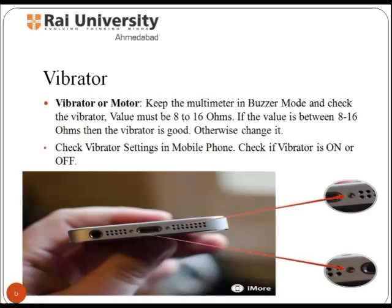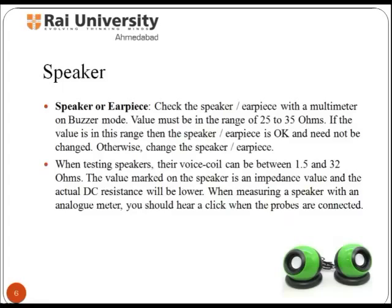Also check the vibrator setting in the mobile phone to verify whether the vibrator is on or off. A speaker is used to listen to music and calls, and it is a small device. To test the speaker, check it with a multimeter in buzzer mode. The value must be between 25 to 35 ohms; if the value is in this range, the speaker is okay, otherwise it needs to be changed.